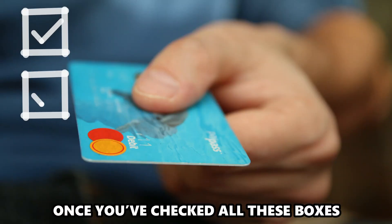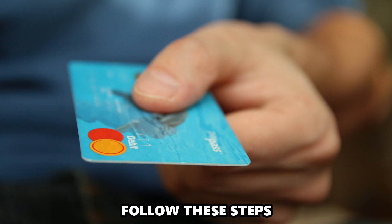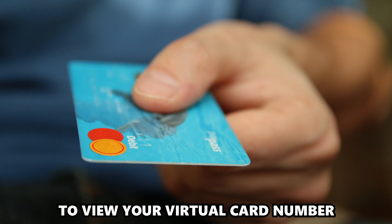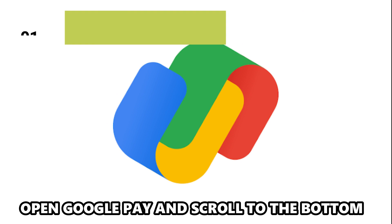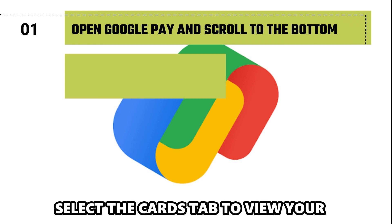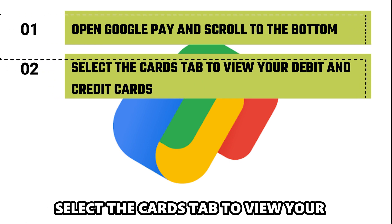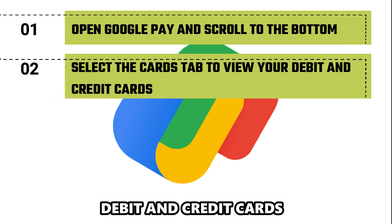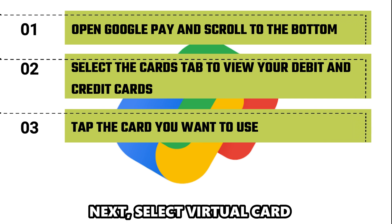Once you've checked all these boxes, follow these steps to view your virtual card number. Open Google Pay and scroll to the bottom. Select the Cards tab to view your debit and credit cards, then tap the card you want to use.